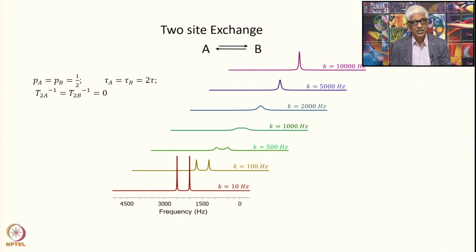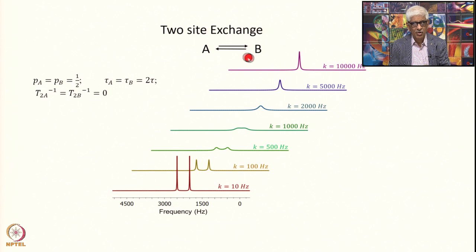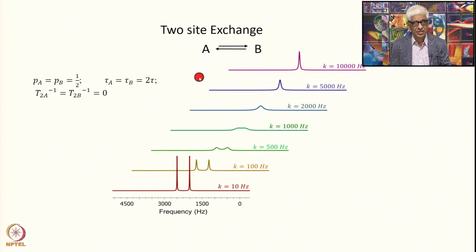Consider a simple two-site exchange: a chemical exchange of a proton between two sites A and B which have different chemical shifts. These are the two chemical shift positions in terms of frequency. The exchange depends on the exchange rate and the population of these individual states, which in turn depends on the energy difference between the two. There can be a barrier resulting in different forward and backward rates, and the exchange rate is defined as the sum of these two rates.